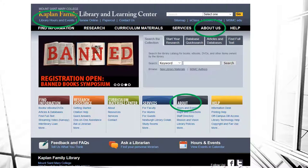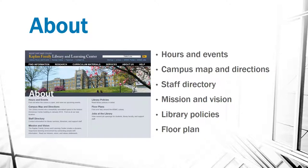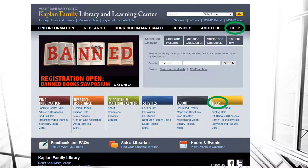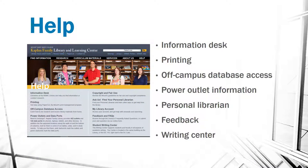If you're interested in when the library is open, what events there might be, or other information about the library, you can click on those links to find out when the library's physical building is open, a map to the campus and directions, a directory of the library staff, information about the mission and vision, policies of the library, and a layout of the floor plan so you can see where different study rooms and study areas are located. The Help section is there for you as well, with information about the information desk where librarians are available, printing questions, how to access databases from off campus, information on power outlets in the library, our personal librarian program, a feedback option, and a link to the Writing Center.